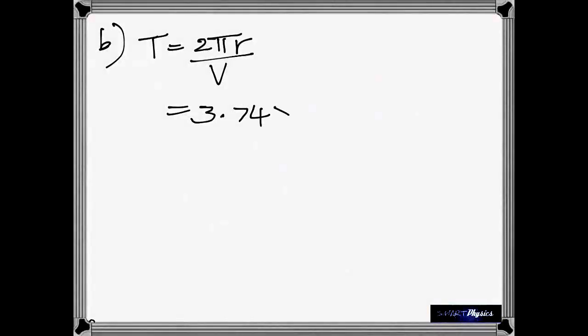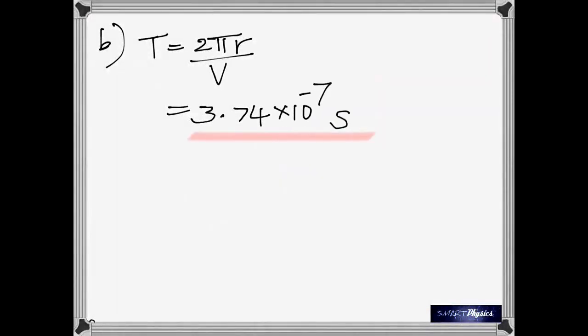In the B part you are asked to find the time period. That is the time taken to make one complete rotation. Which would be equal to distance by velocity. Time is distance by velocity. Here the distance is the circumference. So it's 2 pi r by velocity. Which gives you 3.74 times 10 to the negative 7 seconds.